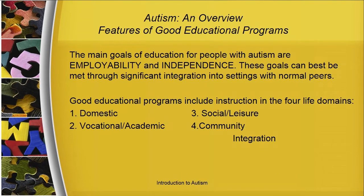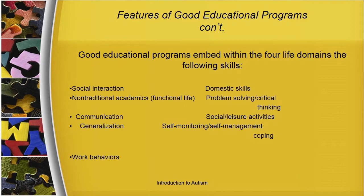The main goals of education for persons with autism are employability and independence. These goals can best be met through significant integration into settings with normal peers. Good educational programs include instruction in the four basic life domains of domestic skills, vocational academic skills, social leisure skills, and community integration skills. Good educational programs embed within the four life domains the following skills: social interaction, domestic, non-traditional academics or functional life practical things, problem solving, critical thinking, communication, social leisure activities, generalization, self-monitoring, self-management coping, and work behaviors.